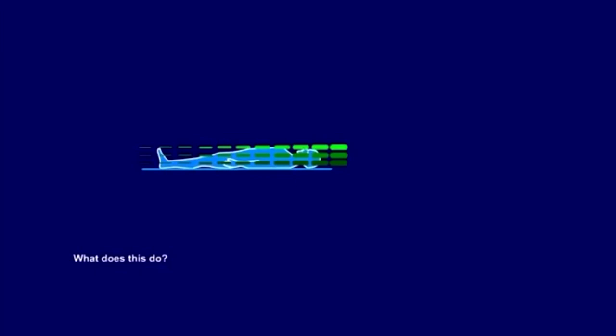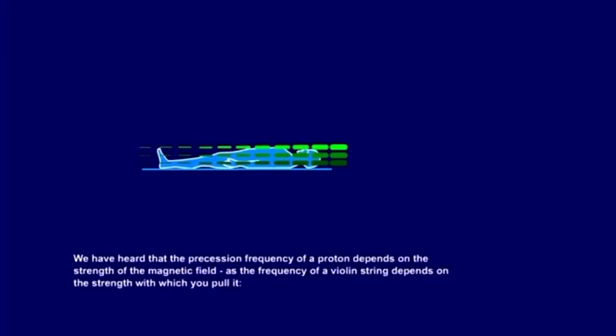What does this do? We have heard that the precession frequency of a proton depends on the strength of the magnetic field, as the frequency of a violin string depends on the strength with which you pull it.